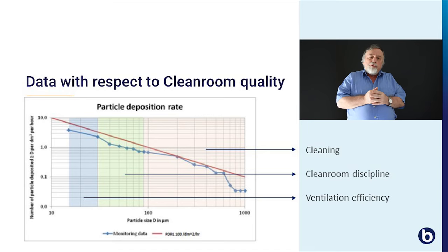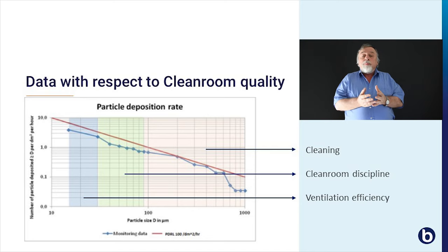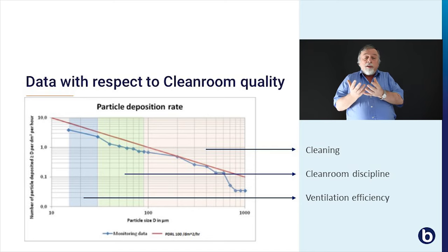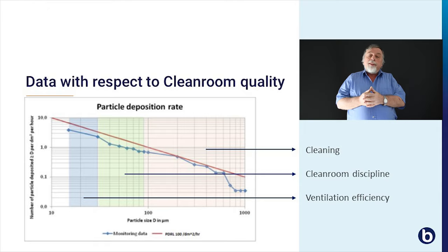On the left side is the impact of the ventilation system. In the middle is the impact of cleanroom discipline — number of people and garments they use. On the right hand side is the influence of the cleaning program.